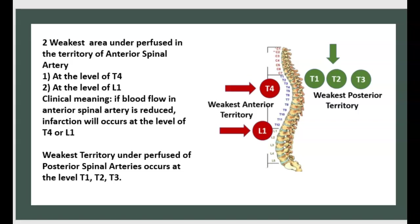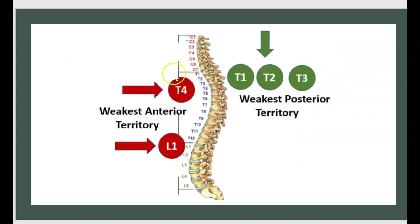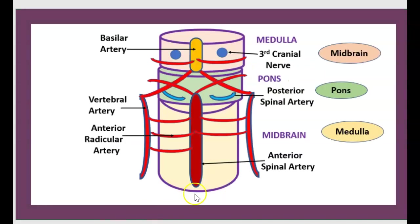What is the clinical meaning of this? If blood flow in the anterior spinal artery is reduced, infarction will occur at the level of T4 or L1. The weakest territory under perfusion of the posterior spinal artery occurs at the levels T1, T2, and T3. To summarize: weakest territory of the anterior spinal artery is T4 and L1; weakest territory of the posterior spinal artery is T1, T2, and T3.